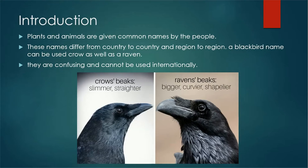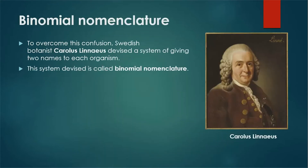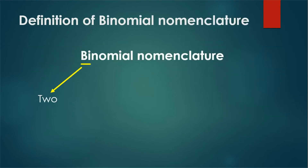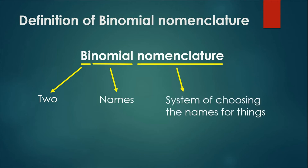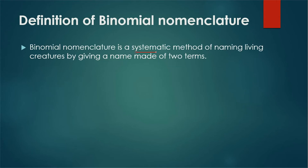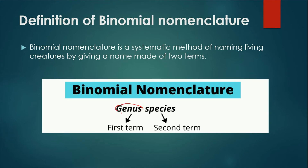To overcome this confusion, the Swedish botanist Carolus Linnaeus devised a system of giving two names to each organism. This system is now known as binomial nomenclature. 'Binomial' means two names, and 'nomenclature' means a system of choosing names for things. The definition of binomial nomenclature is a systematic method of naming living creatures by giving a name made up of two terms — the first represents the genus, and the second represents the species.